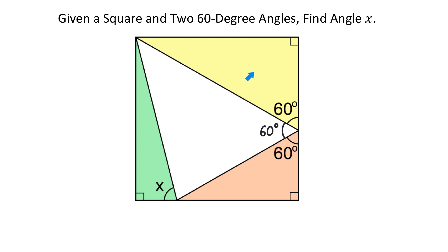Now, in the yellow right triangle, if this angle is 60 degrees, then this one is 30 degrees. And this is because in any triangle, the sum of all three angles has to be 180 degrees. So, 90 plus 60 plus 30 makes 180.